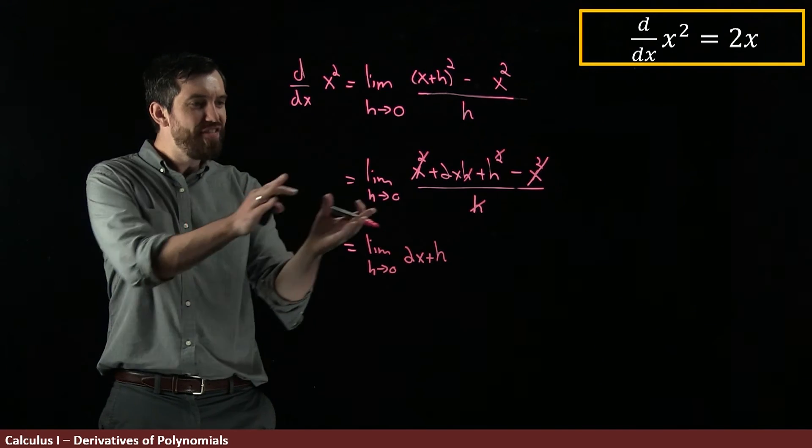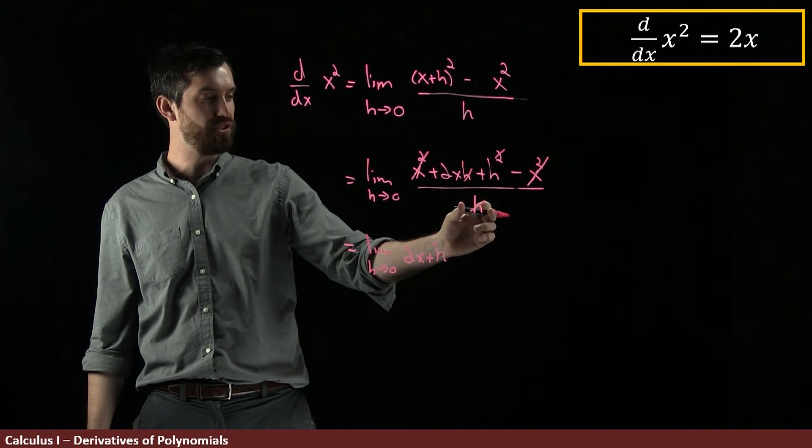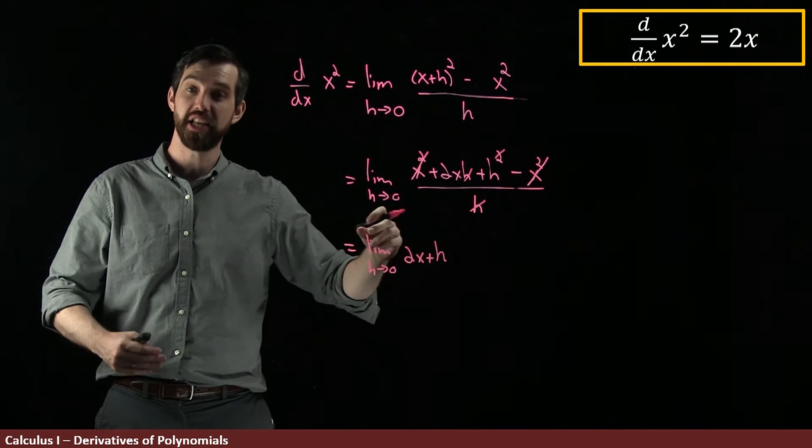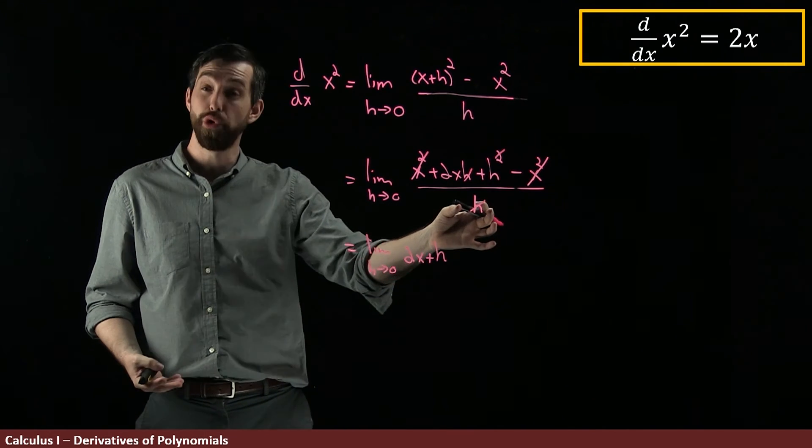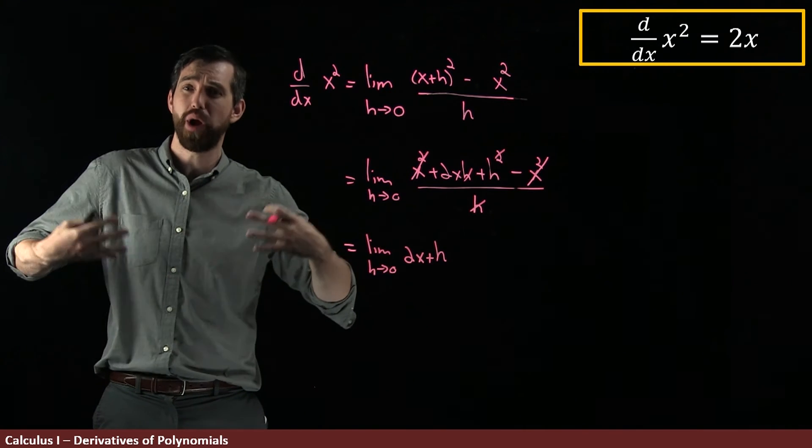Now at this point I haven't actually computed the limit yet, I've just done some cancellation. And by the way, I'm allowed to cancel this h from the top and bottom because I'm inside of a limit. I don't have to worry about taking it as h = 0 because I'm dealing with a limit around h = 0.